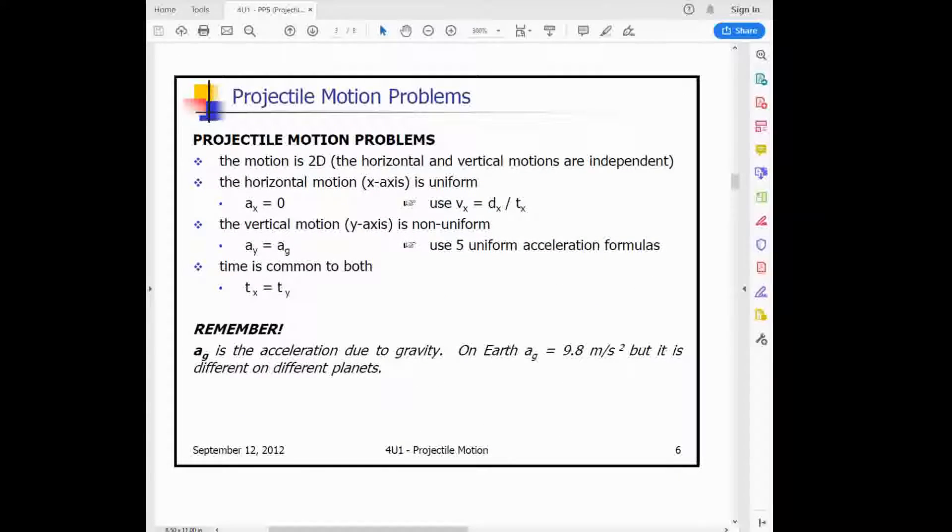Even though the acceleration or fall of the object is independent, there is a common factor, and that's time. The time it takes for something to fall vertically is the time that it's experiencing that horizontal velocity as well. If you find time in the vertical dimension, you'll find time in the horizontal dimension, and vice versa. In summary, for projectile motion problems, these are 2D problems. The horizontal motion has no acceleration, so we use velocity equals displacement over time. The vertical motion is non-uniform, so we use the five uniform acceleration formulas. When doing gravity problems on Earth, we can use 9.8 meters per second squared as an approximation of the acceleration due to gravity.